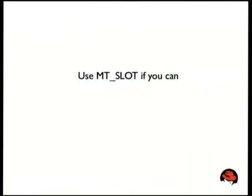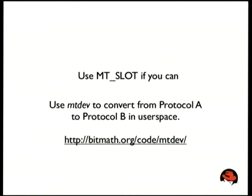You notice that in protocol B the slot value can be missing in certain events because the kernel buffers repetitive events. So in the client, you have to remember: last slot was zero, just got tracking ID of minus one, therefore touch point zero has disappeared. If you can, always use the slot protocol — it's so much easier to handle. There is a tool called mtdev by Henrik Rydberg, who is responsible for both protocols, which converts in user space from protocol A to protocol B. So in X we have a strict requirement for protocol B, and if a device only supports protocol A, you convert it first.